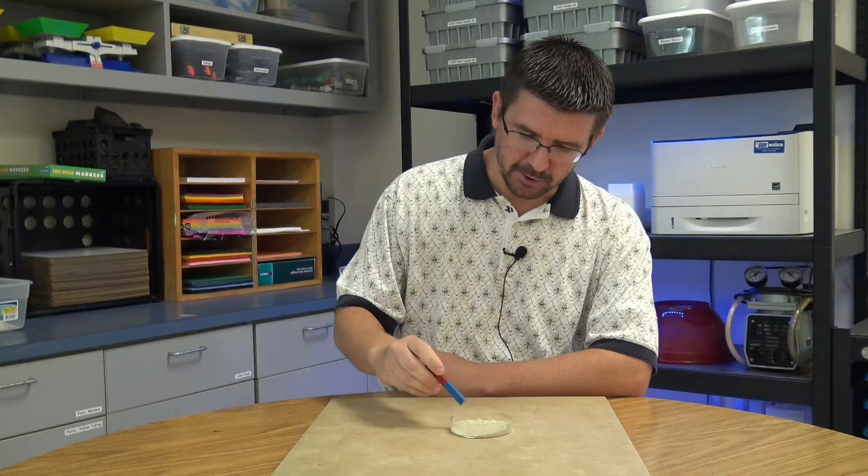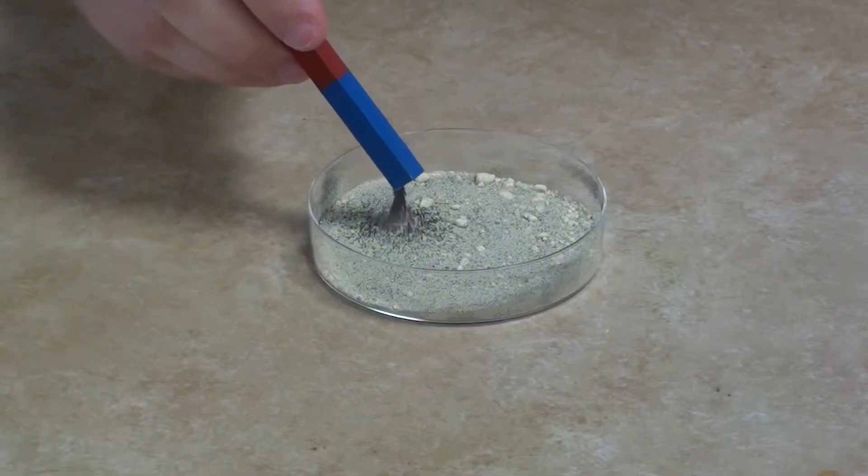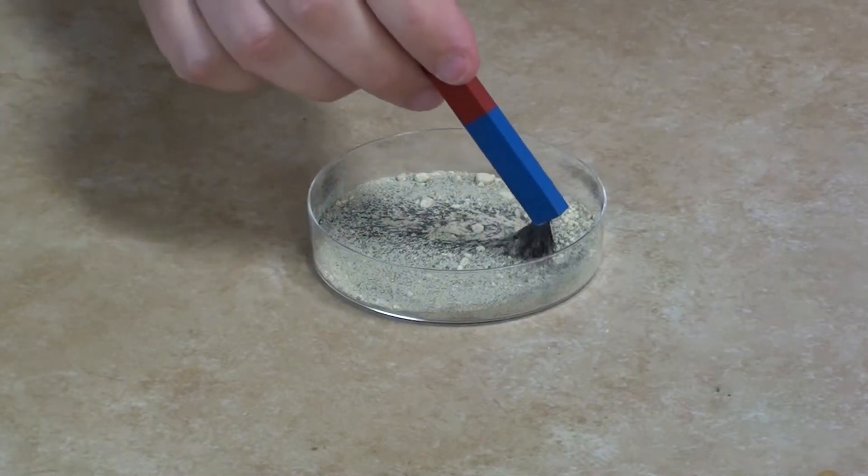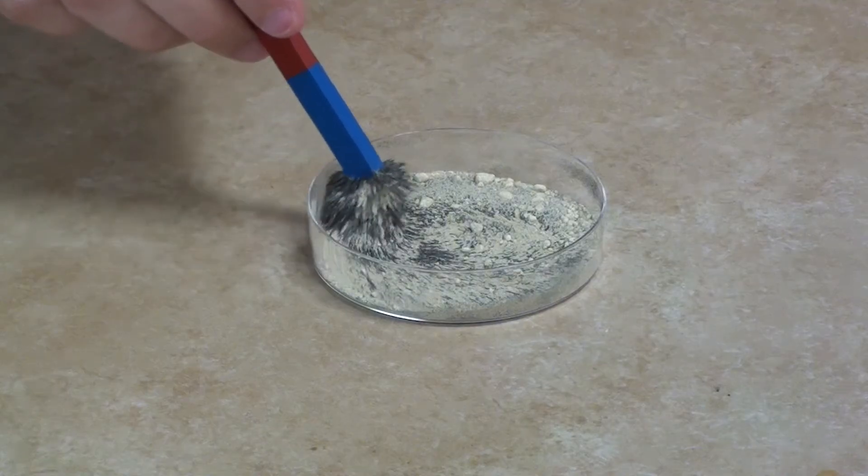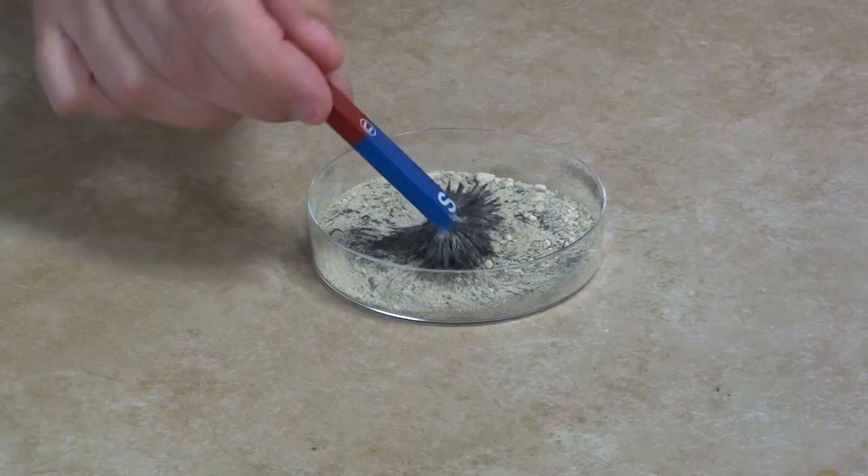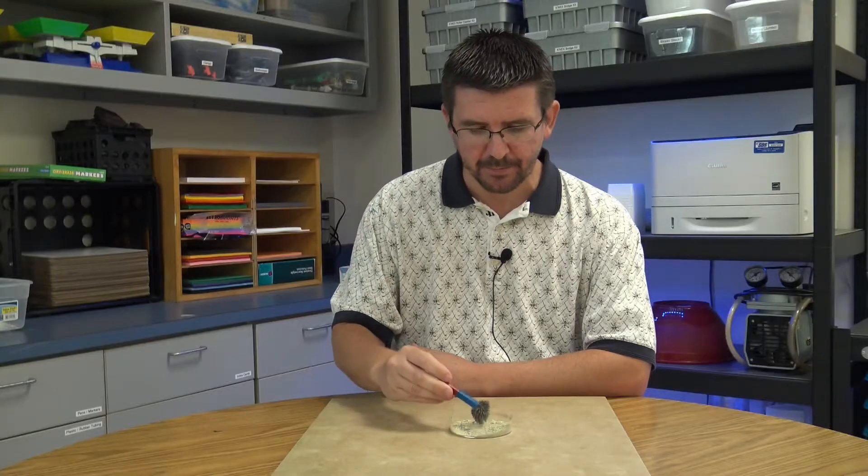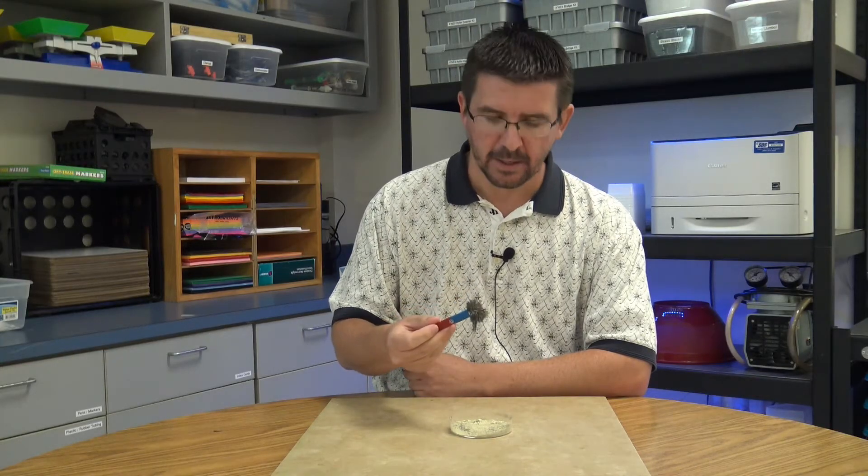So in order to separate these two chemicals, all I need is a magnet. You can see as soon as I place the magnet near this mixture, the iron immediately starts coming out of it. So we're actually able to use a magnet to separate a ferromagnetic material from a non-ferromagnetic material. We're able to separate the iron from the sulfur.